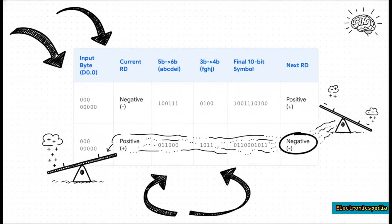This table, right from the PCIe spec, shows this in action. Just look at the input byte — it's the exact same in both rows, all zeros. But if the running disparity is negative, meaning we've sent too many zeros lately, the encoder says time to balance things out and picks a symbol that's heavy on the ones, flipping the disparity back to positive. And if it was already positive, it does the exact opposite, sending the zero-heavy version. Same input, completely different output — all in the name of perfect balance.